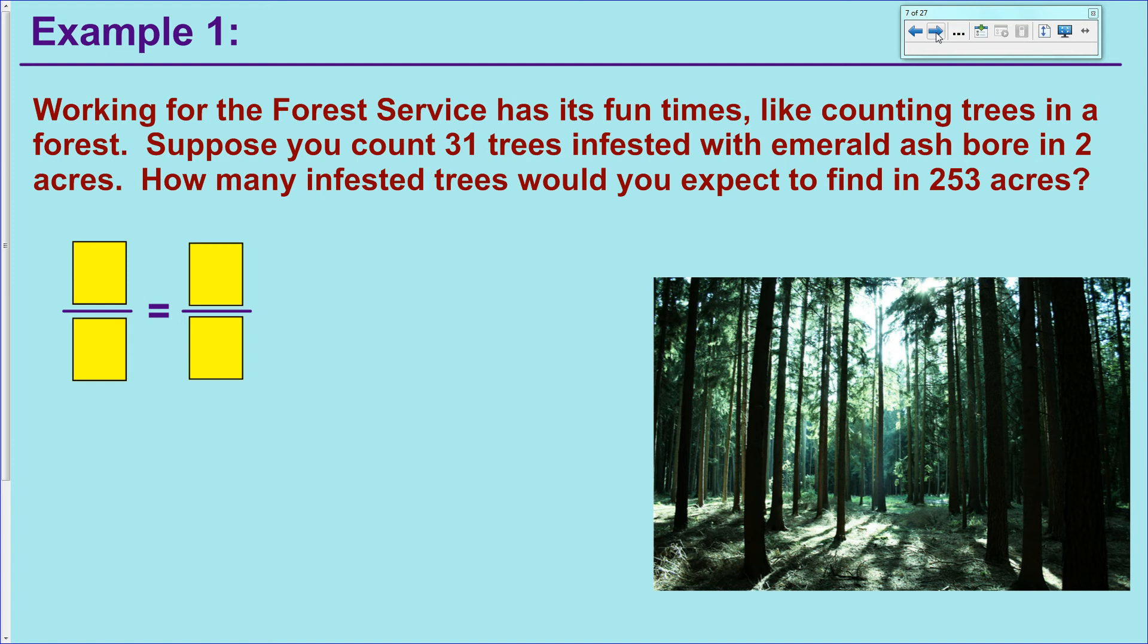Being able to set up a proportion equation is an immensely powerful thing. You can use it to predict from a small scale to a large scale, or vice versa, from a large scale to a small scale. So forensics people use this all the time to determine if they find an arm bone or even a finger bone from some human victim, they can figure out approximately how tall this person was just by measuring in detail how large the bone is that they found. But we're doing something way more exciting here. We're going to count trees in a forest. These are infected trees.